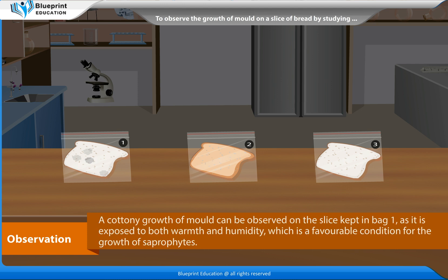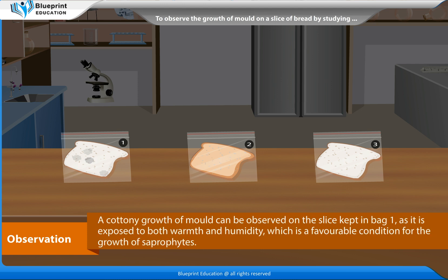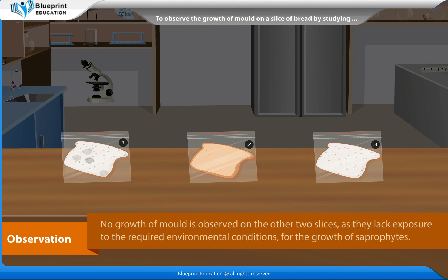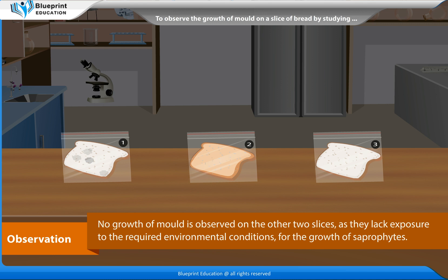Observations: A cottony growth of mold can be observed on the slice kept in bag 1, as it is exposed to both warmth and humidity, which are favourable conditions for the growth of saprophytes. No growth of mold is observed on the other two slices, as they lack exposure to the required environmental conditions for the growth of saprophytes.